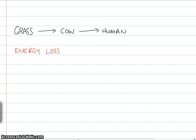Now it is also important to think about energy loss. So we take grass. Of course grass takes its energy from the sunlight. So essentially we are getting our energy from sunlight as well. But there is an energy loss.